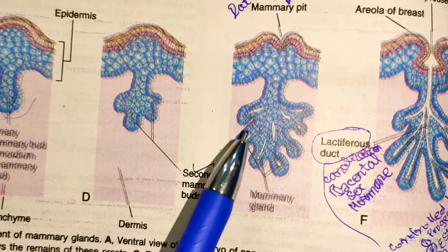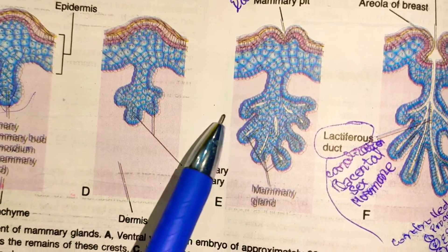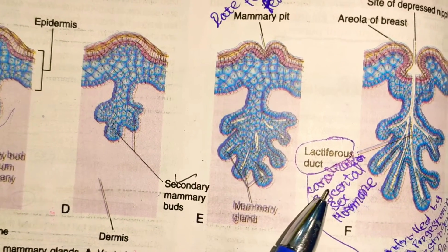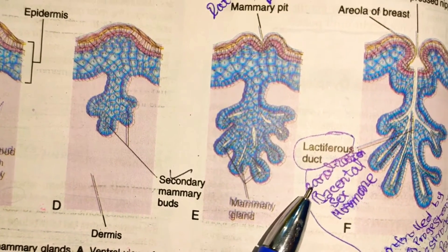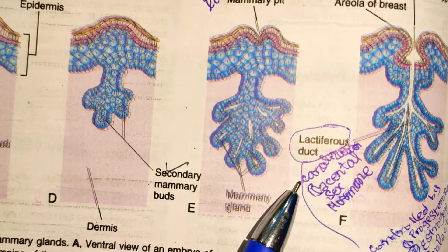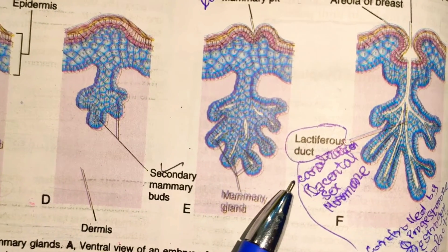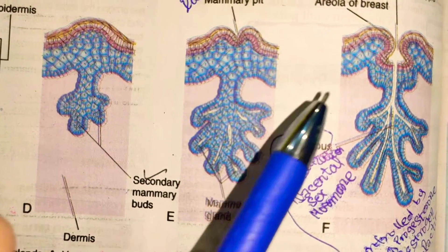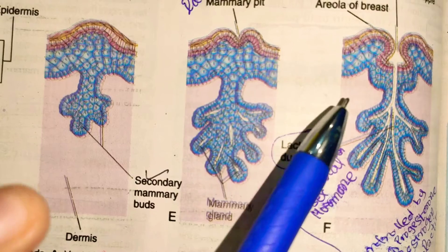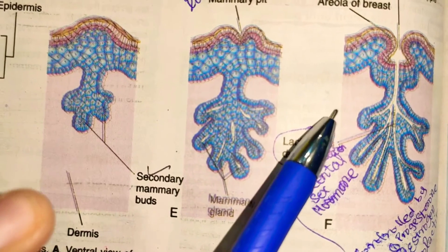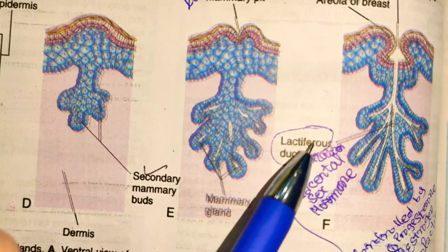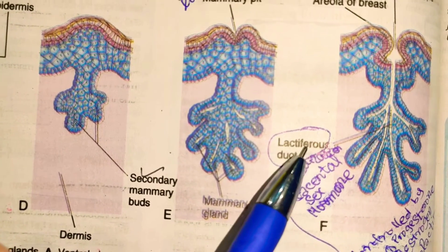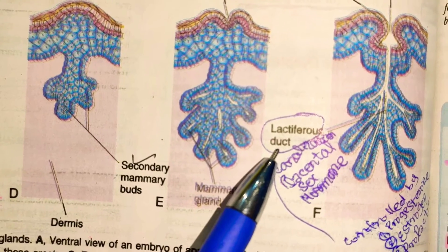The secondary mammary buds produce more branches, and these branches become the lactiferous ducts. Canalization occurs within these ducts, forming canals through which milk will eventually pass to supply nourishment.